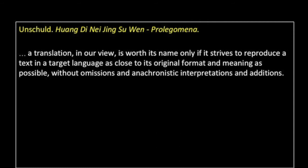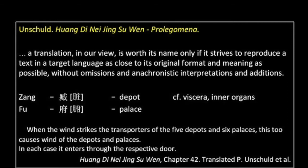Another aspect of the style issue presents itself when academics analyze TCM texts in a philological context, as seen in the important translations of Professor Unschuld. In the prolegomena to his translation of the Huangdi Neijing, he states: 'A translation is worth its name only if it strives to reproduce a text in a target language as close to its original format and meaning as possible, without omissions and anachronistic interpretations and additions.' While very worthy as a goal, his use of terms such as 'depots and palaces' adds little to our understanding and doesn't help improve patient treatment.